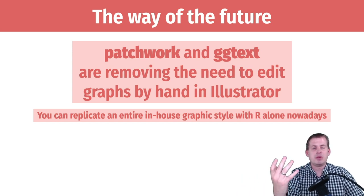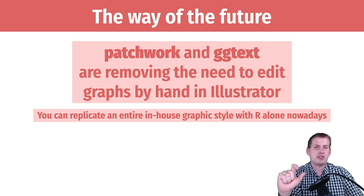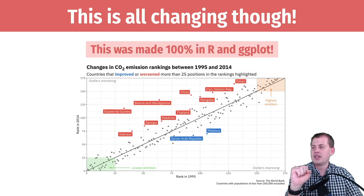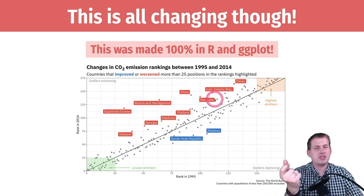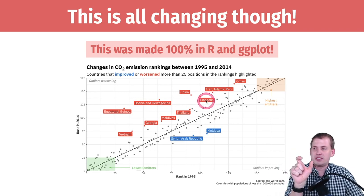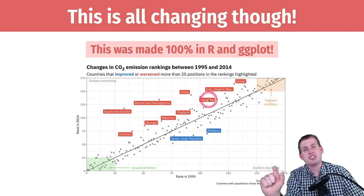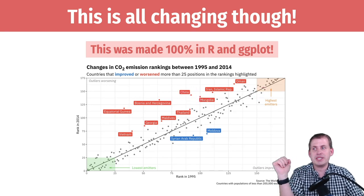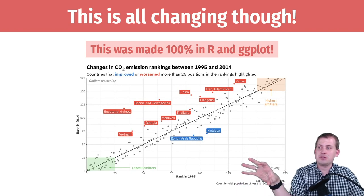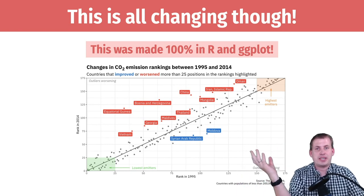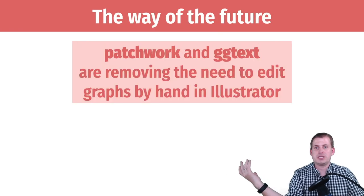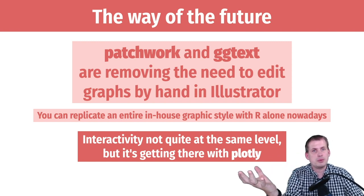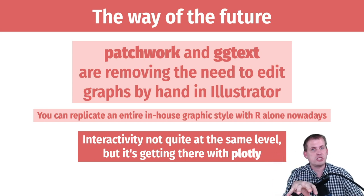It saves a ton of hand-editing time, though it does increase the time you spend in R fiddling with things. Sometimes you will still need Illustrator — for instance, if you can't get Mongolia's label to go in the right place no matter how many seeds you try and don't want to use a nudge, you can open it in Illustrator and move that label wherever you want. But unless you're dealing with really tiny specific things like that, ggtext and patchwork and custom fonts get you about 99% of the way there.